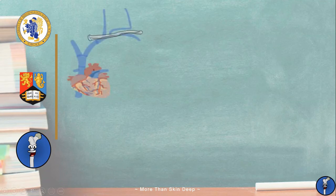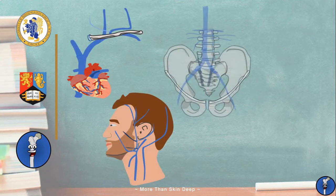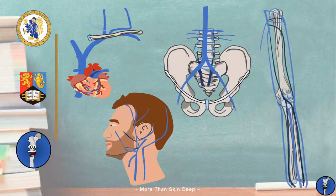Learning the major blood vessels of the body is no easy task, but once done it will make your understanding of regional anatomy so much better. This is the second and last part in our major blood vessels series, so if you haven't already watched our video on the major arteries, go check it out now. The veins follow a similar pattern, and seeing the arteries first will help you out a lot.